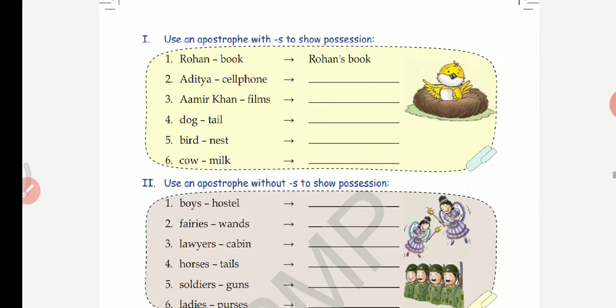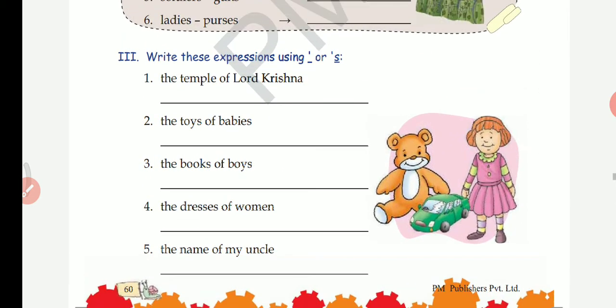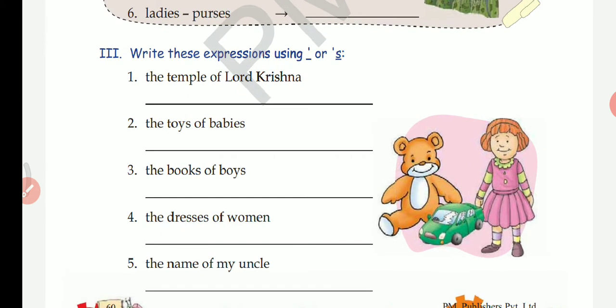Based on these two rules you can solve the exercises. Yesterday we discussed question number one and two, and today we'll be heading towards question number three. Write these expressions using apostrophe and S after apostrophe. The first question is: the temple of Lord Krishna.